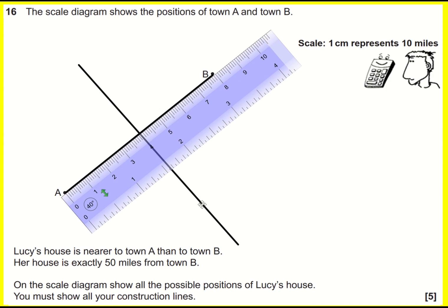Now you can't just draw that line like I have. We're asked to show all our construction lines, so we have to use a pair of compasses to draw this perpendicular bisector, and I'm going to show you how.